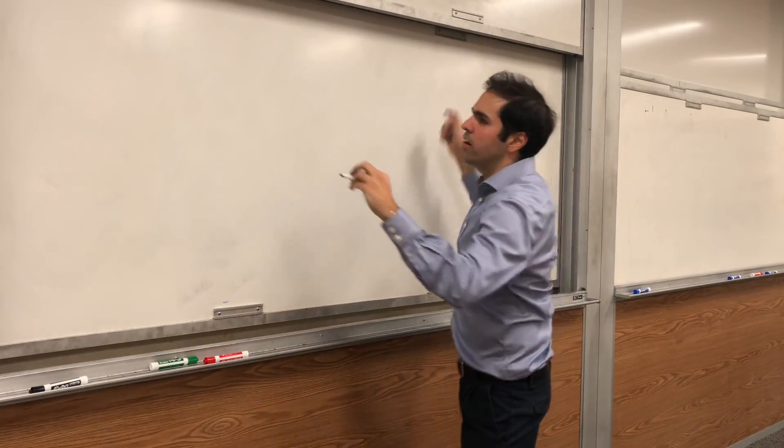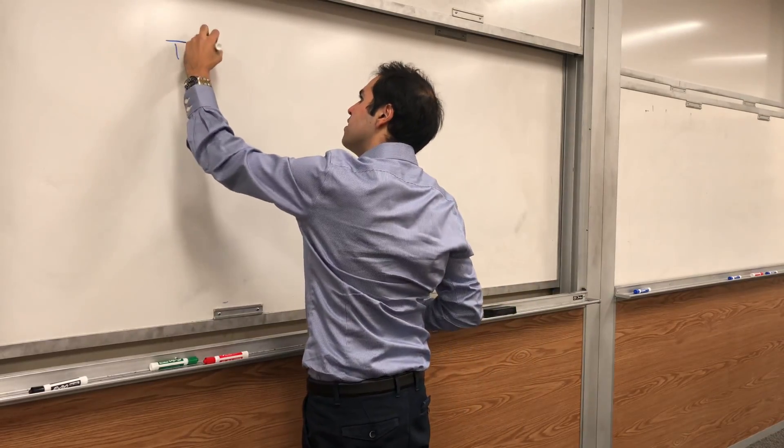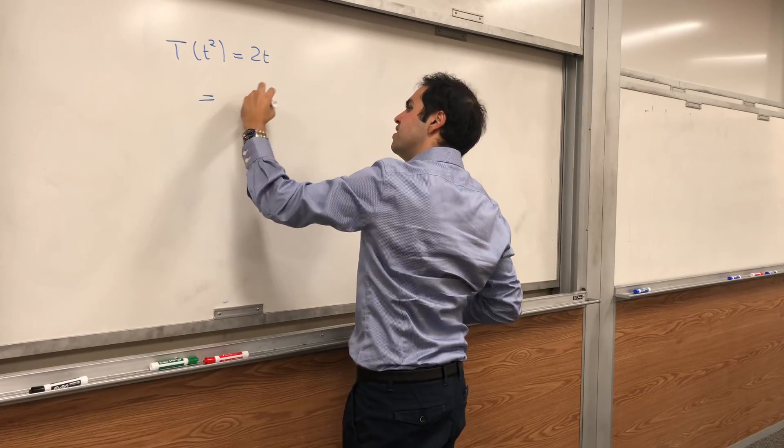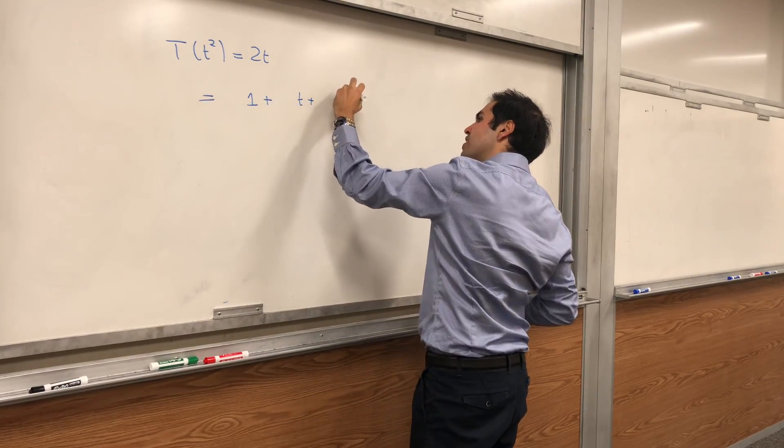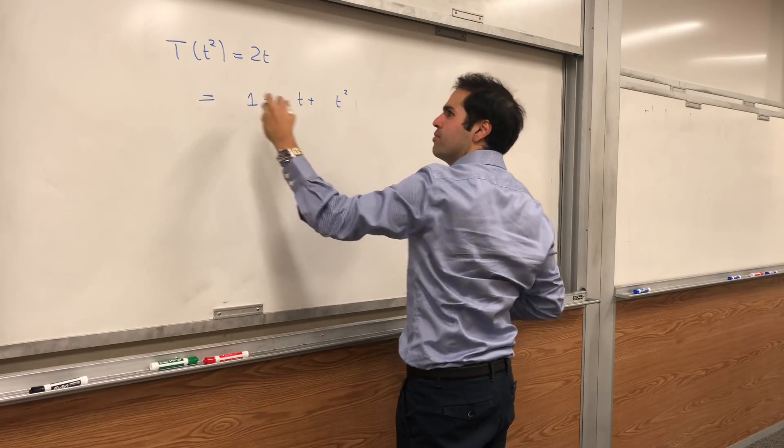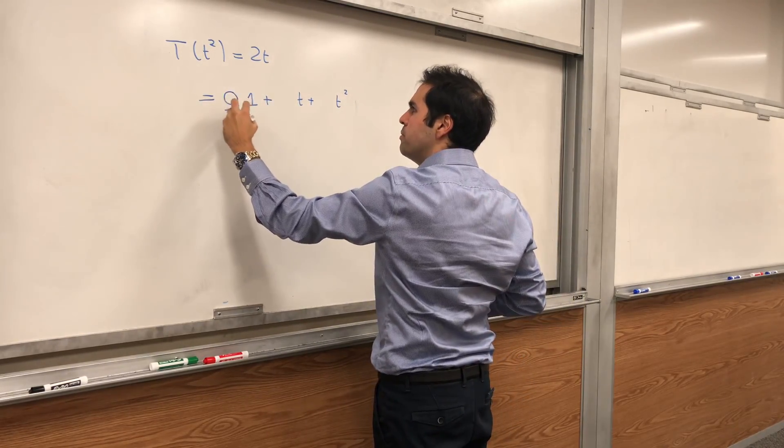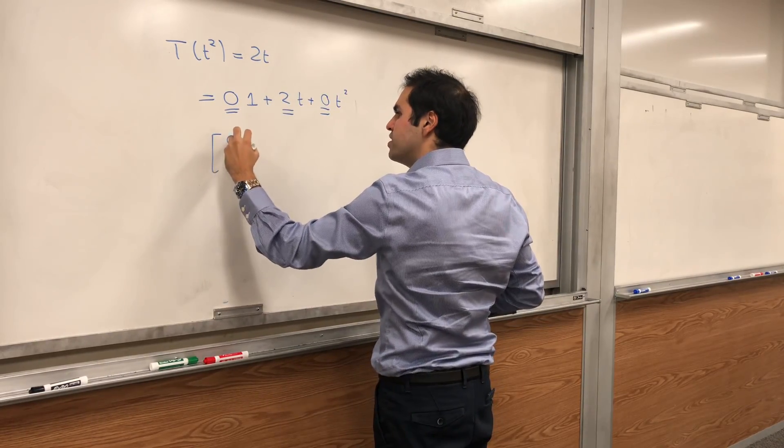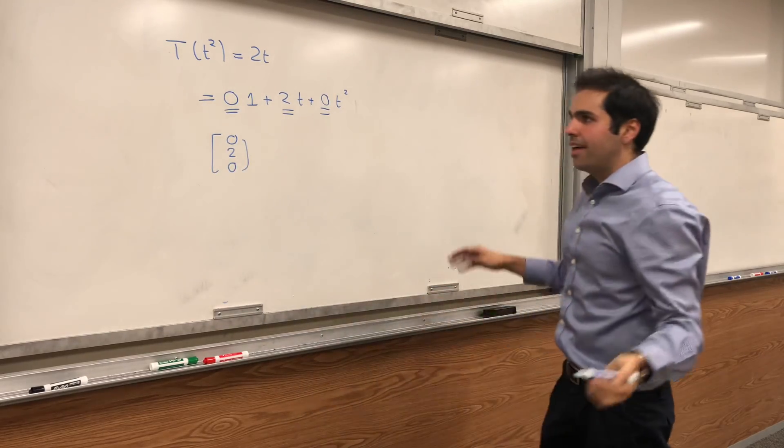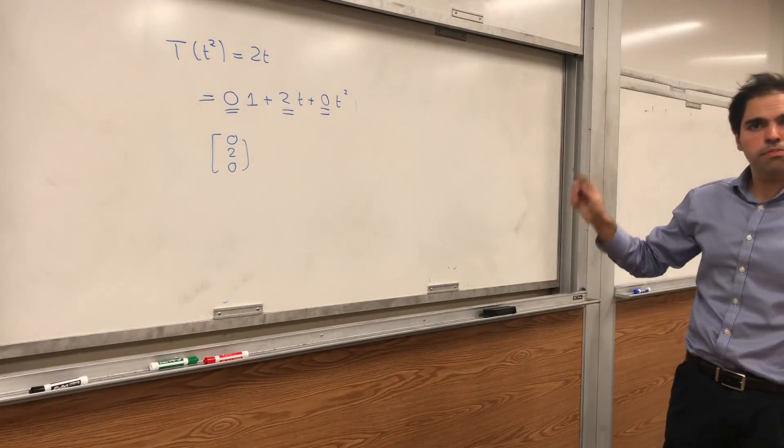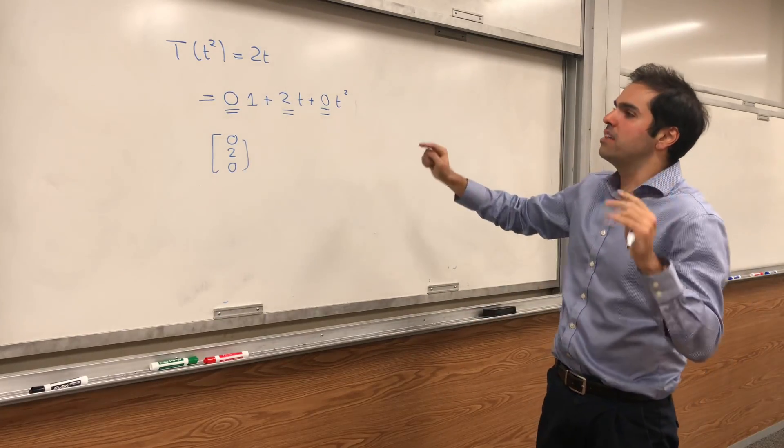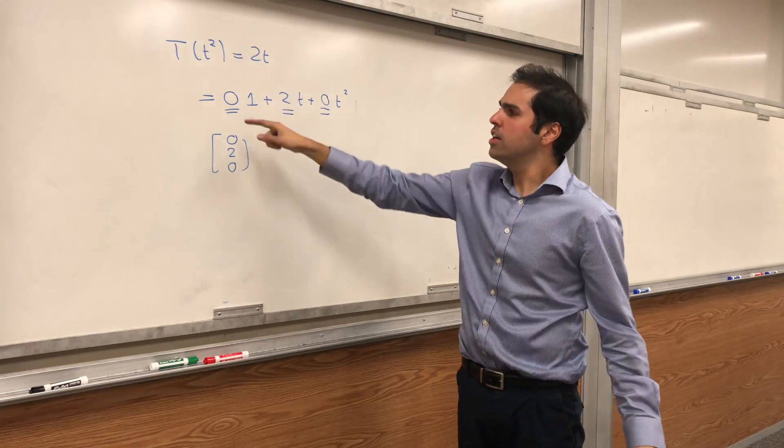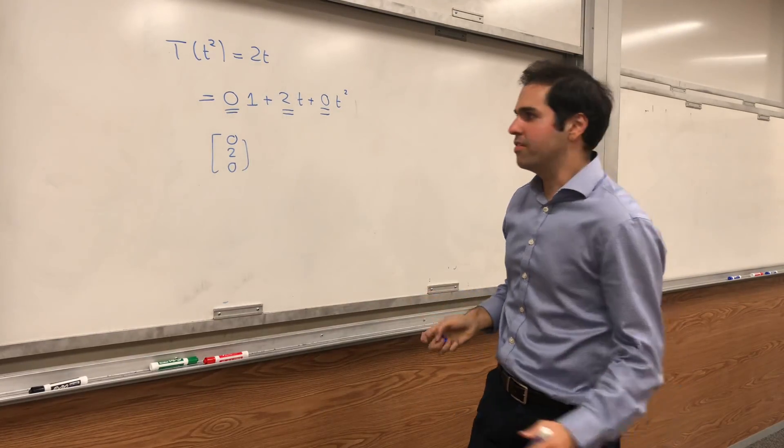And then just continue. So T of t squared, that's 2t, and you want to express it in terms of 1, t, t squared. So that becomes 0 times 1 plus 2 times t plus 0 times t squared, which is 0, 2, 0. And those vectors are predetermined. It depends on b and it depends on c.